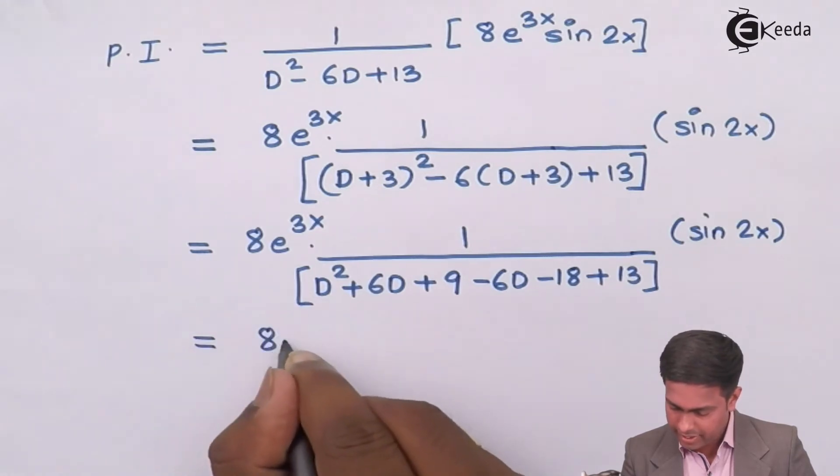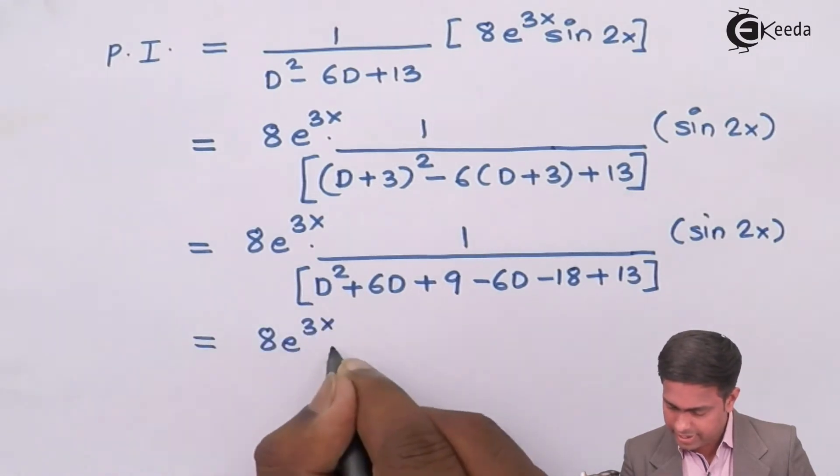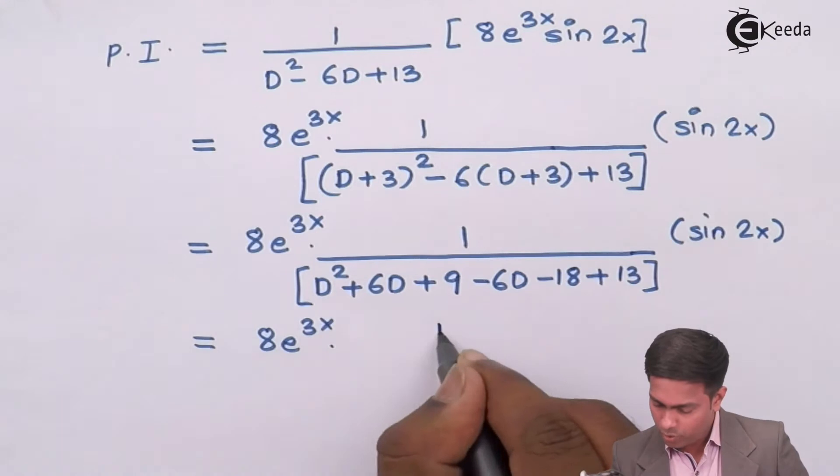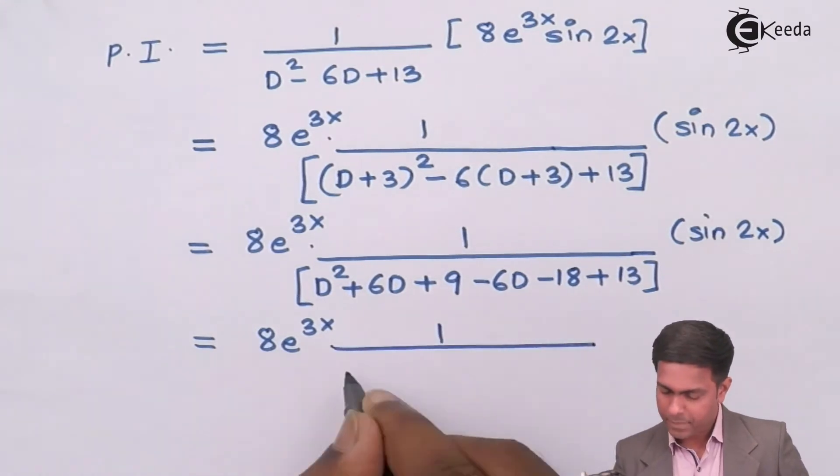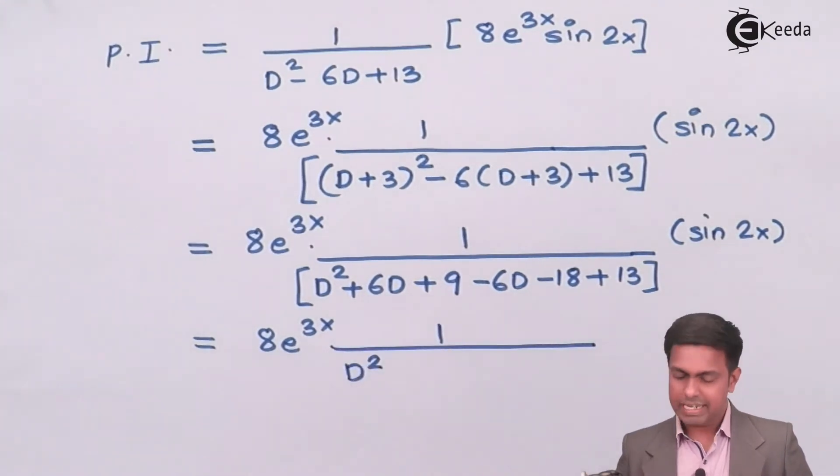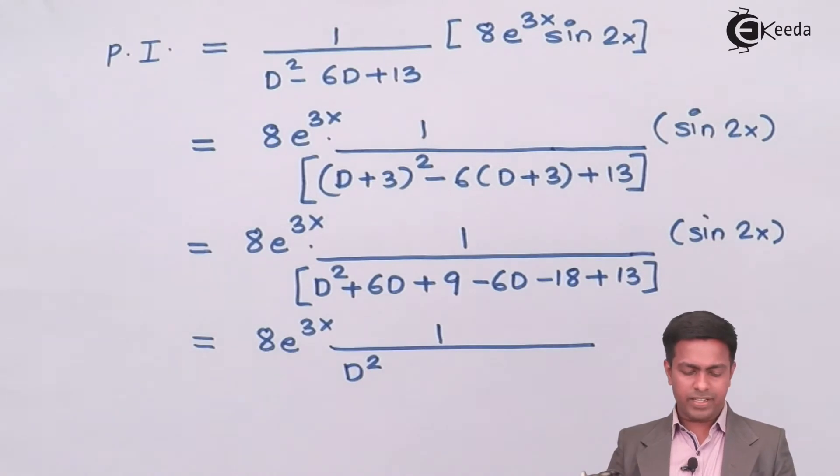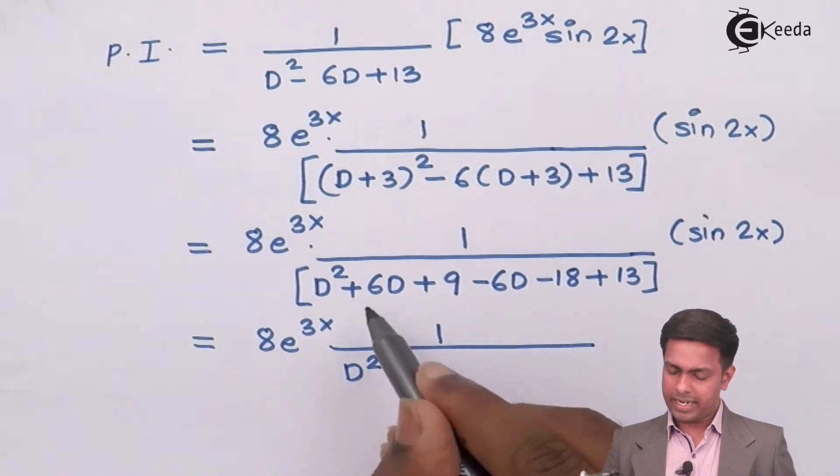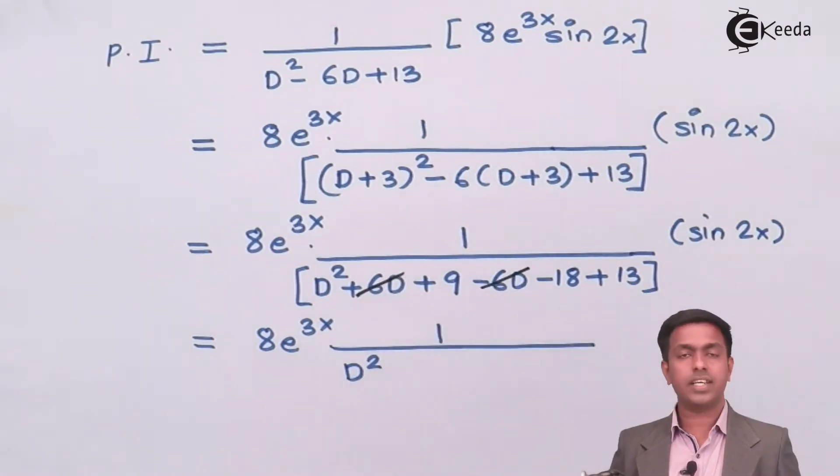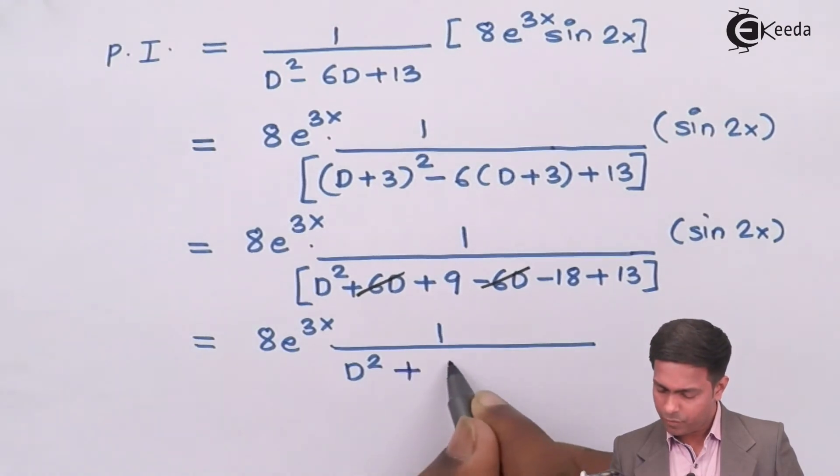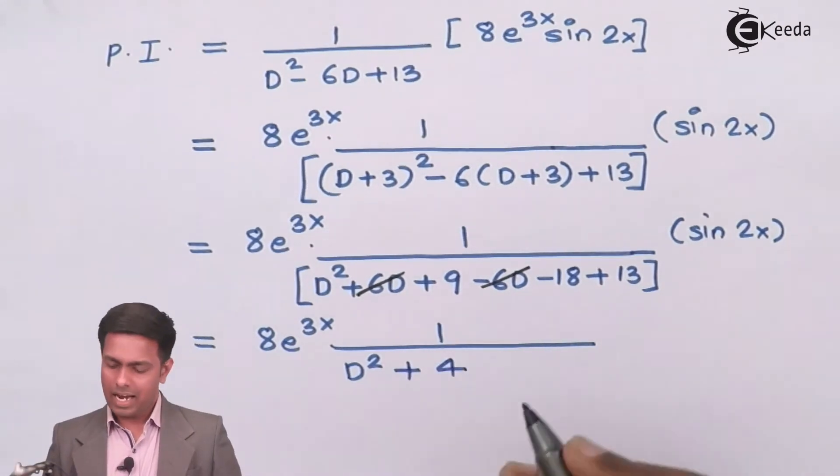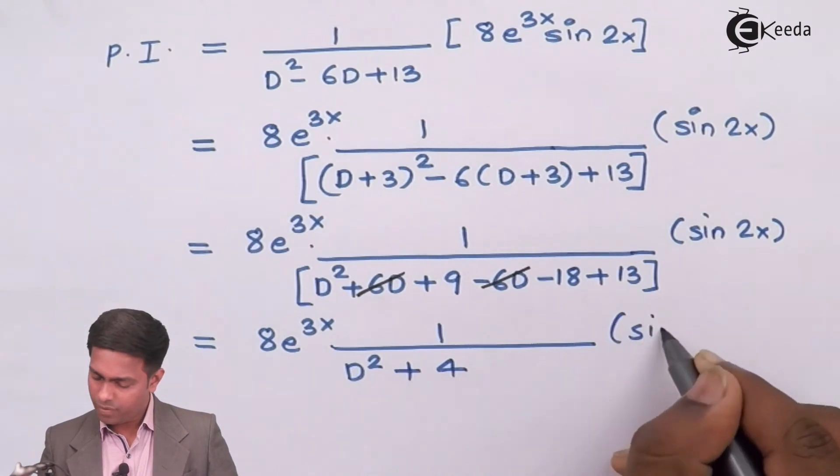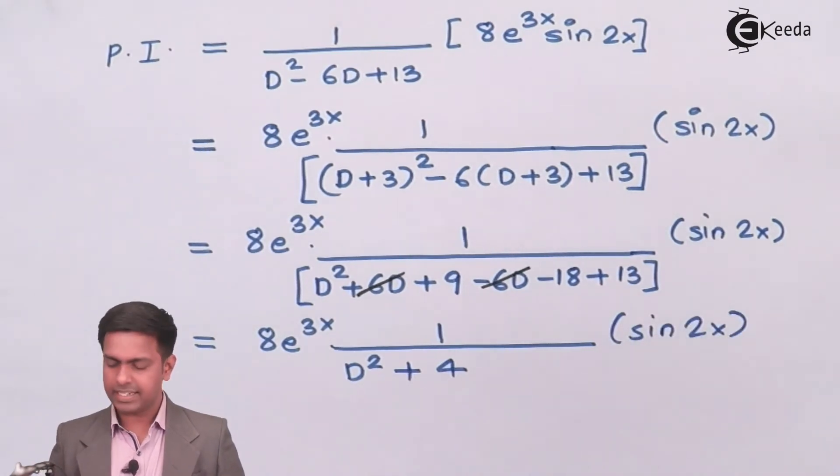8 e to the power 3x into 1 upon D². Let's simplify this. Here I can cancel 6D with -6D and we will get 9 + 13 = 22, minus 18 that is +4 and sin of 2x as it is.